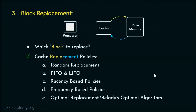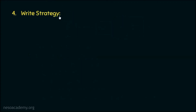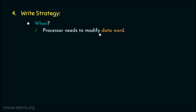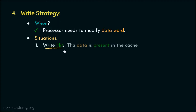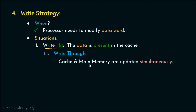Now let's talk about write strategy. It is needed whenever the processor needs to modify a data word. There are two situations: the first is a write hit, meaning the data word to be modified is already present in the cache. For write hit, we have two strategies. The first is write through, where both the cache and the main memory are updated simultaneously.